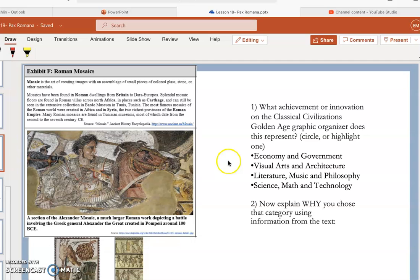Below you have different images of Roman mosaics. You're going to be highlighting or circling which innovation or category it would fall under, and then you need to explain why you chose that category. You need to go back into the text and pull out information to support your answer.